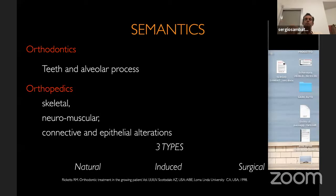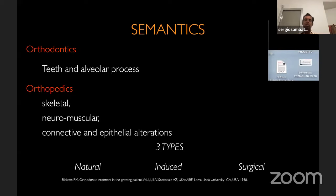Today we'll talk about Class II malocclusion in the permanent dentition. To define: orthodontics involves moving teeth, while orthopedics involves skeletal, neuromuscular, connective, and epithelial alteration. We know three types of orthopedics: natural orthopedics, which is growth-induced; correction during early treatment; and surgical orthopedics.